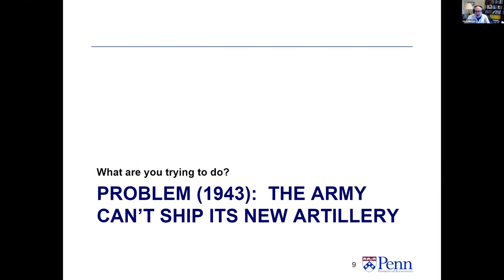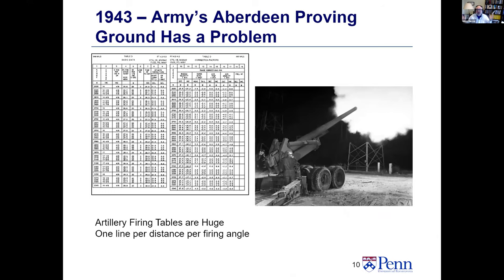What problem were they trying to solve? The Army had a tremendous problem in World War II — it couldn't ship its new artillery. It was just sitting there, unshippable, because they couldn't compute the firing tables needed to aim the guns. These firing tables are huge. You fix an angle for the gun, then compute the powder and all kinds of corrections for wind speed — very, very complicated.